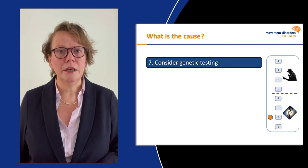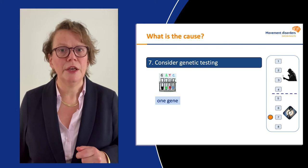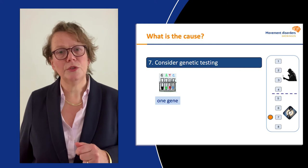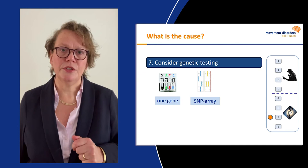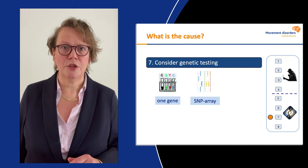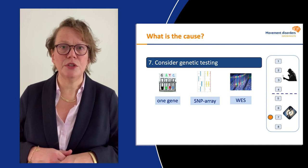So we went for genetic testing. The first thing to think about is whether there is a specific gene you want to test. For example, in myoclonus dystonia with a very typical phenotype, you directly sequence the epsilon-sarcoglycan gene. But in our patient with isolated generalized dystonia, you want to screen for several genes. A step in between is to consider a SNP array, which you especially do when patients also have intellectual disability — which was not the case in our patient. So we did whole exome sequencing, and as a step in between, you can apply a filter and do panel sequencing to specifically look for genes involved in dystonia.